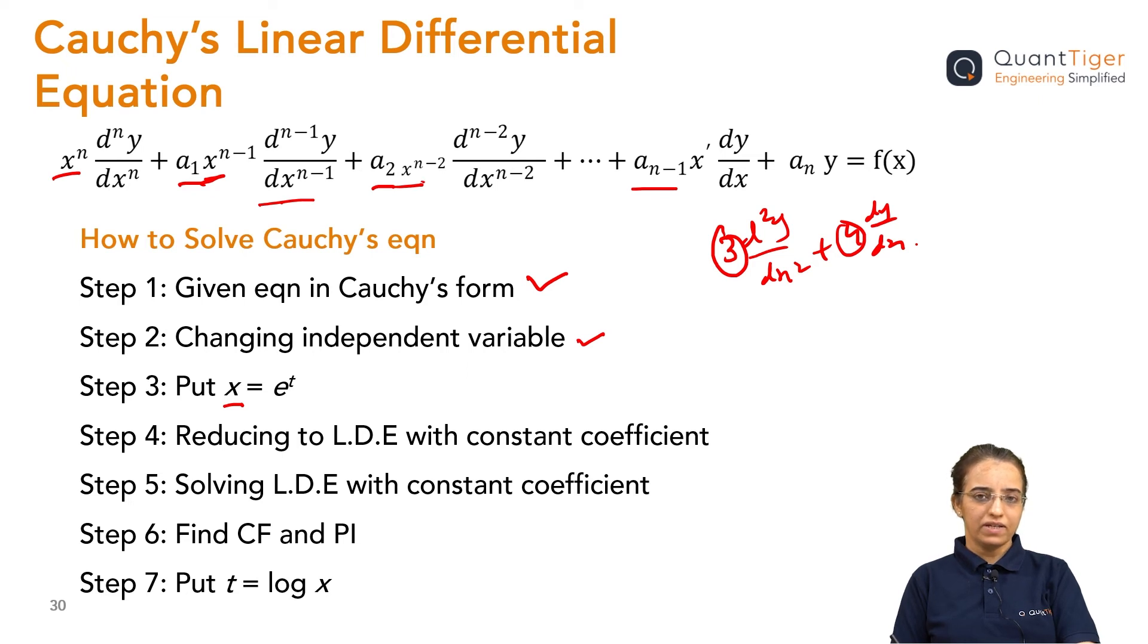Once you get that in their format then it is easy to solve it whatever the method we use to use it. For finding CF and then finding PI in terms of independent variable that we will do it. And then for other thing is last thing which we have to remember: after getting CF, PI, last answer should be in the form of x because we have done here in the substitution instead of for x we have done e to the power t.